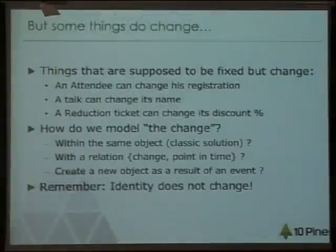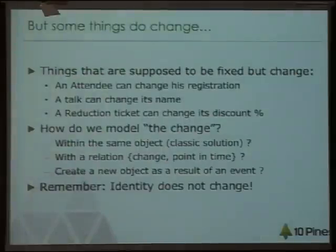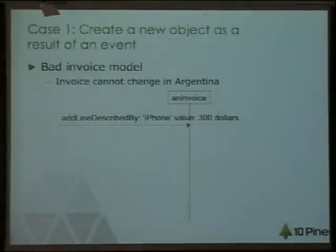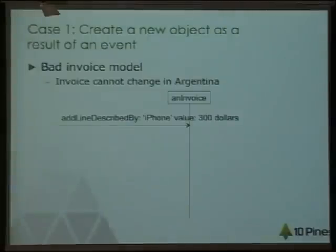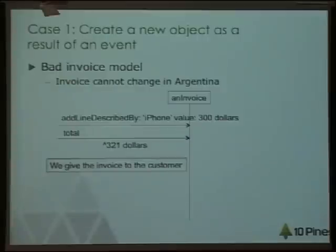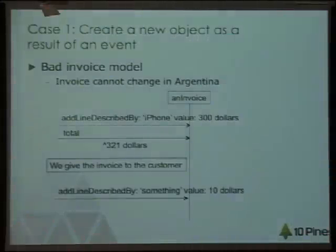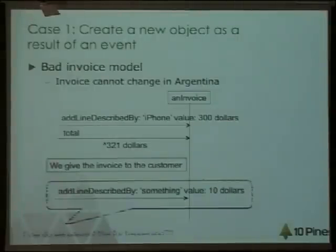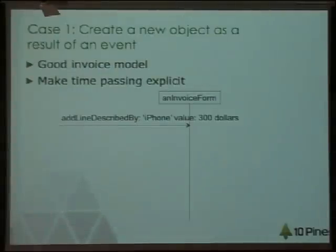You're telling us not to have setters and to use immutable objects, but some things change — so how do you solve that problem? One example is that this is a bad solution to represent an invoice. An invoice in Argentina cannot be changed once you give it to the customer. Here, we create an invoice, we give it to the customer, but nothing prevents us from sending a setter message to change it. That's not a good model.